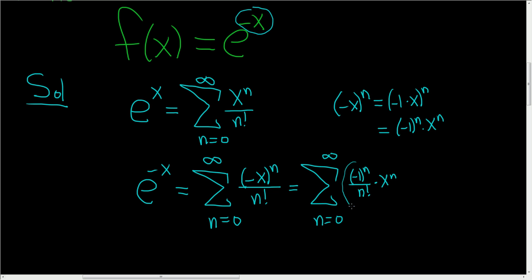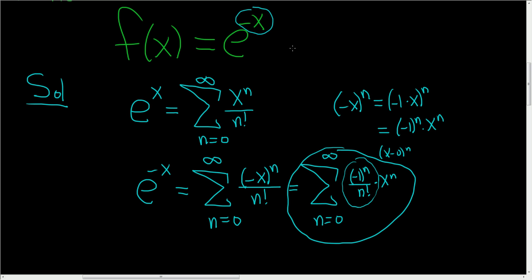This is a power series centered at 0 — this is x minus 0 to the n — so this is indeed the Maclaurin series for e to the negative x. There's no need to take derivatives or do any of that mess; this is absolutely the easiest way to do it. Hope that made sense.